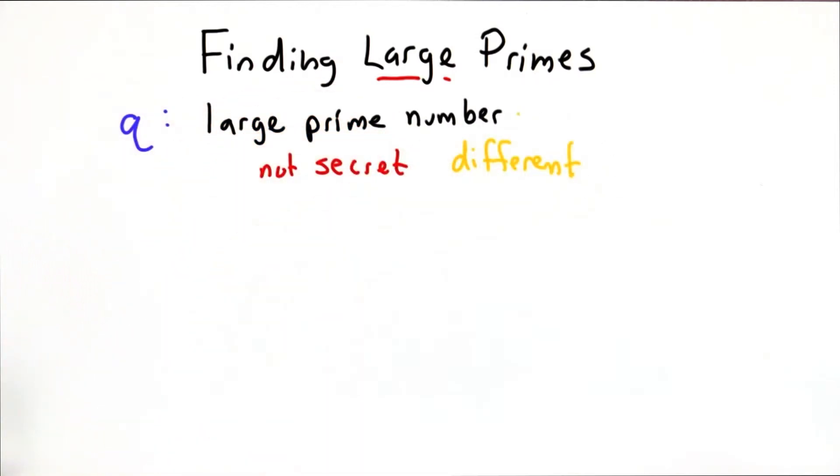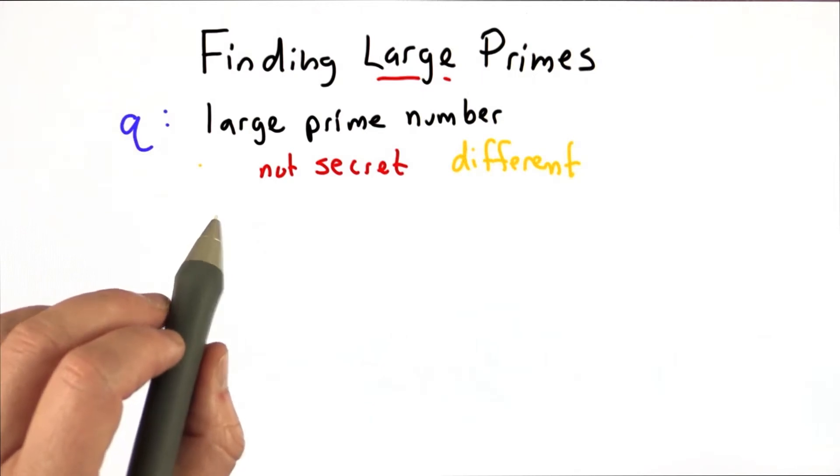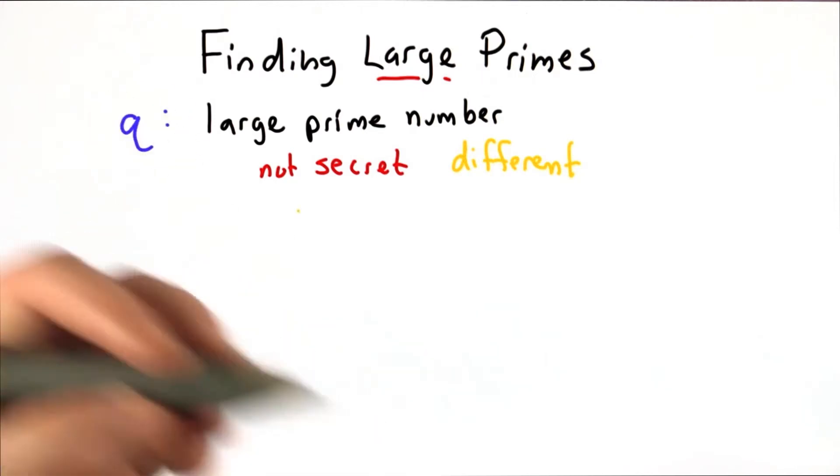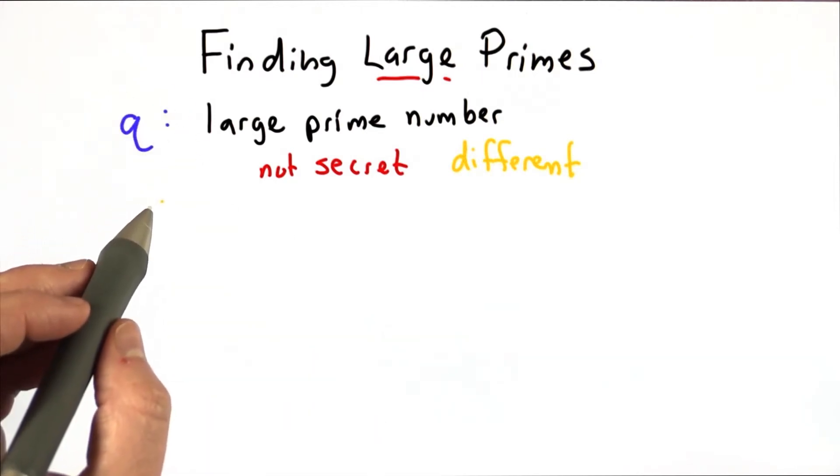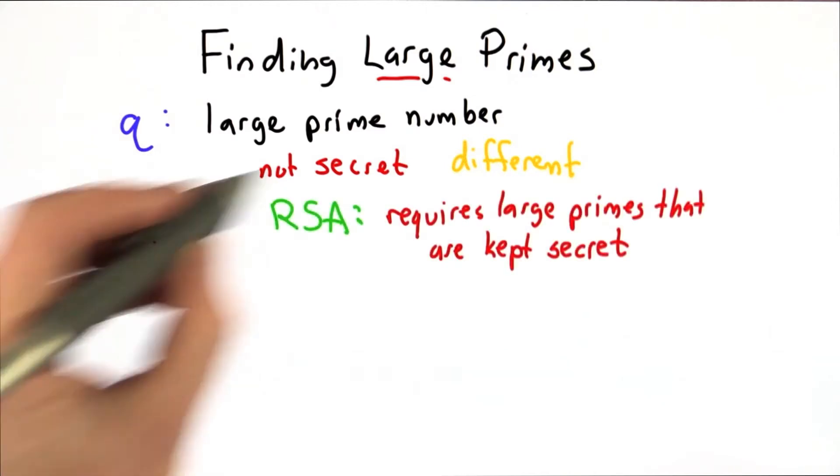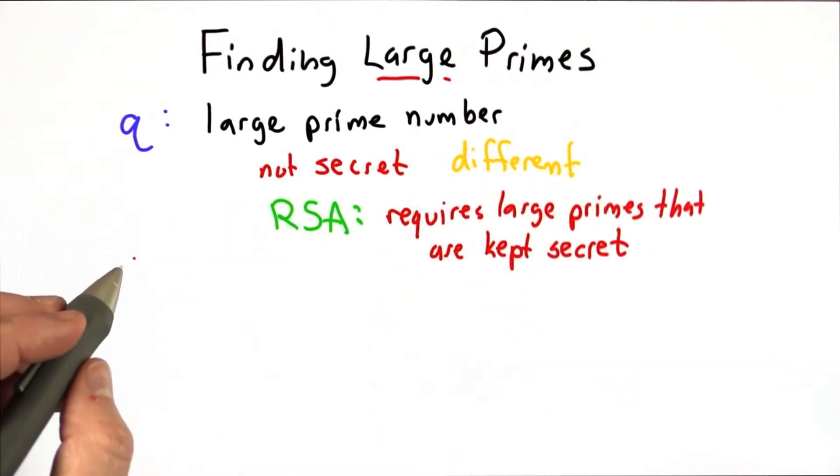The reason we want it to be different is if there was only one large prime number and everyone used the same one, then an attacker could do a lot of pre-computation based on that number and have a better chance of breaking a Diffie-Hellman protocol. So both protocols require a way to generate large prime numbers.